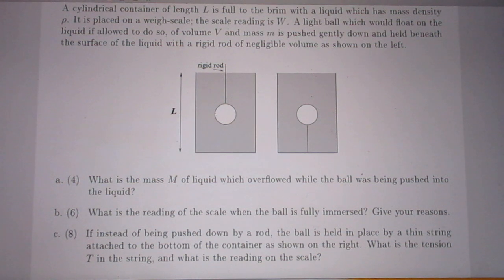It's early morning for me, perhaps not for you. Problem 141. I will read very slowly. A cylindrical container of length L is full to the brim with a liquid which has mass density ρ. It is placed on a weight scale. The scale reading is W, probably W for Walter, not water, but Walter.